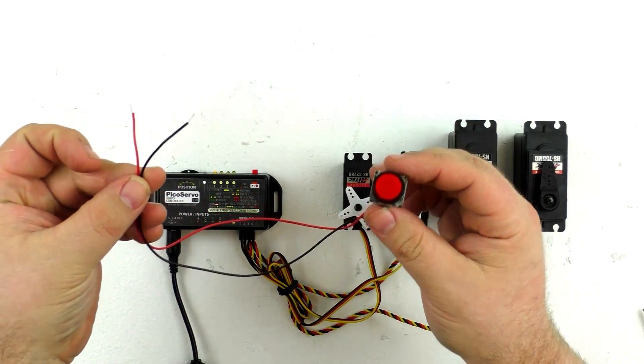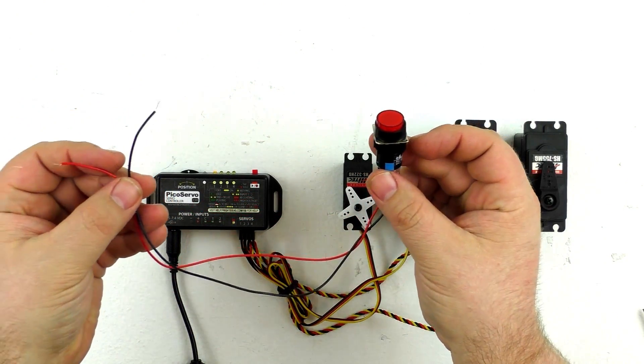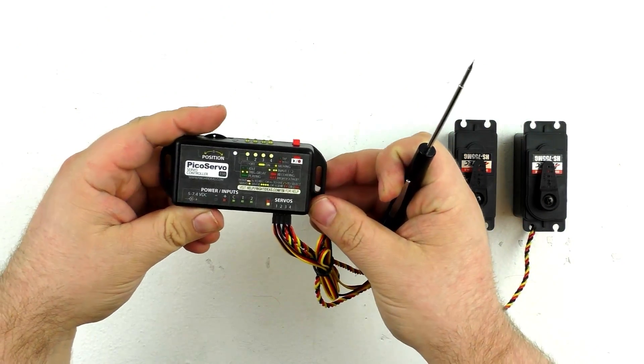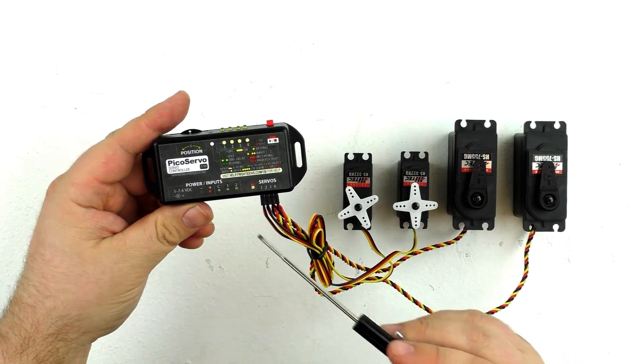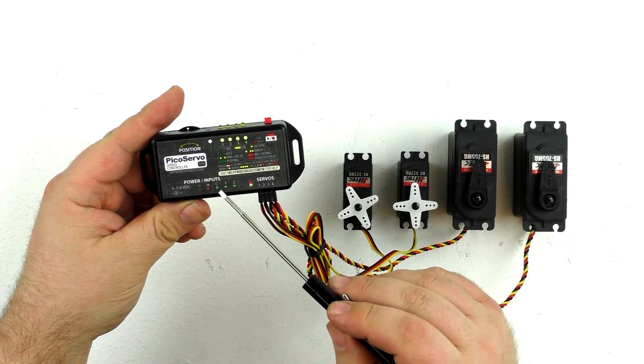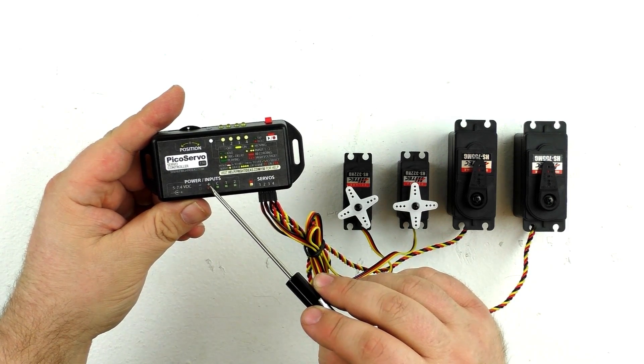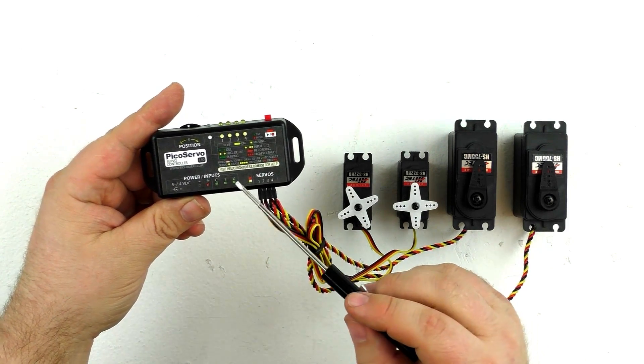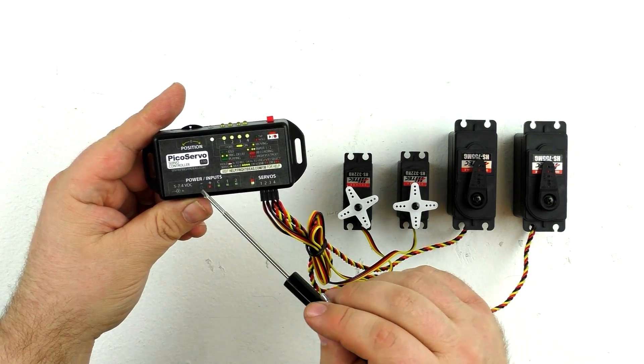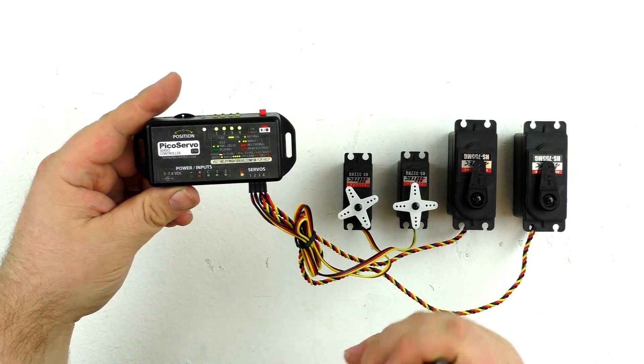We're going to be wiring up a simple two-wire push button for this demonstration. The PicoServo has the trigger inputs here at the bottom. To use a simple push button, we're going to have a jumper wire going from the positive power input over to the common, and then the two wires from the button are just going to go in one and negative. I'm going to wire that up now and I'll be right back.